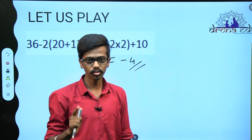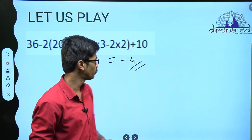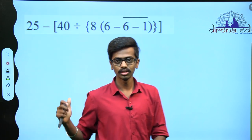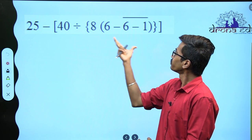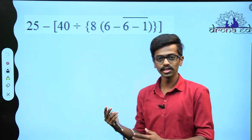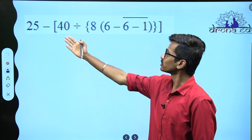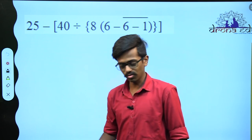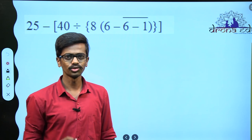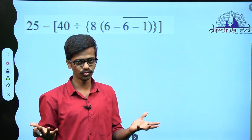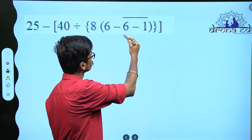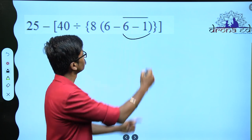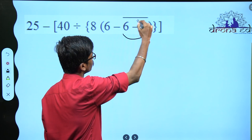Hope you all understood that properly. Now we will make use of different brackets and see if we get something different. You see all variety of brackets here. If you go to the hotel, they give you a menu with all different dishes — like that we have square bracket, curly bracket, common bracket and even the bar bracket. Now we will understand the proper use of each of the brackets.